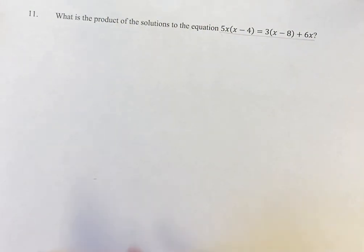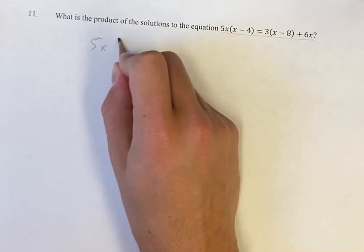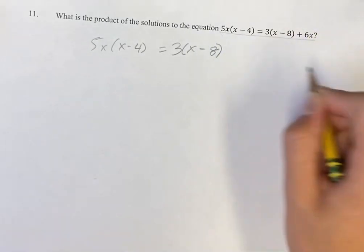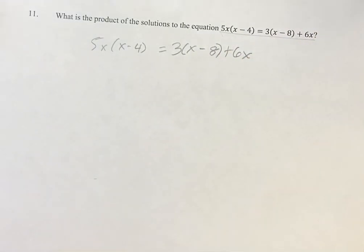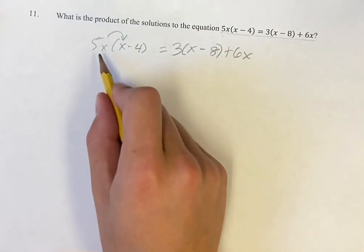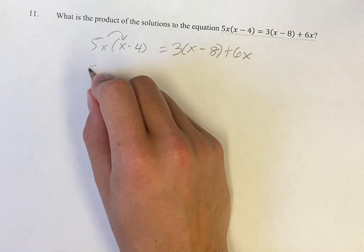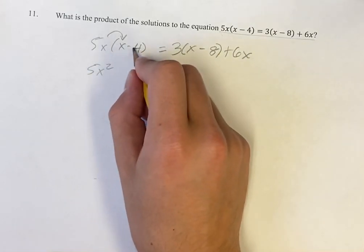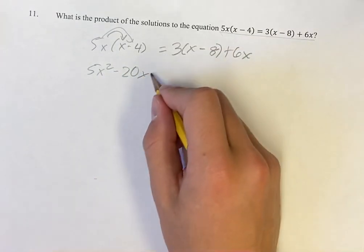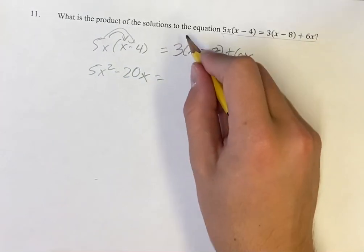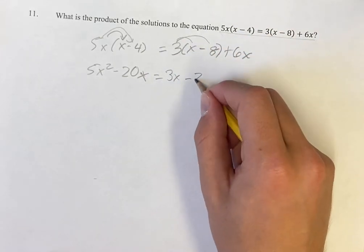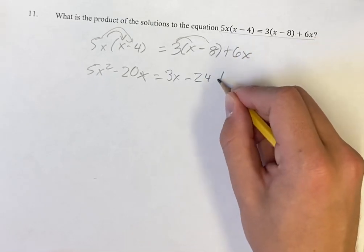That means we're getting more than one solution. If we write out that equation — just one equation with one variable — we can solve it. First, we want to get rid of the parentheses. Distributing: 5x times x is 5x squared, minus 4 times 5x is minus 20x. That equals, distributing again: 3x, and 3 times negative 8 is minus 24, plus 6x on the end.